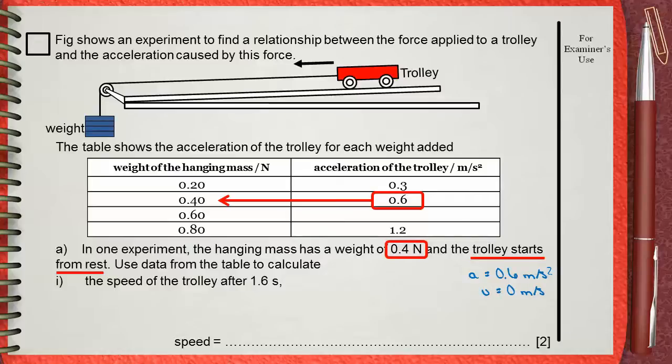Of course, 1.6 seconds is the time. He wants the speed of the trolley after 1.6 seconds. This means he is asking for the final speed v.